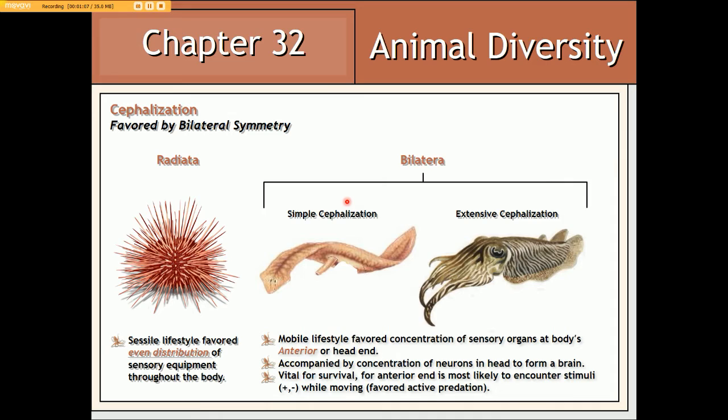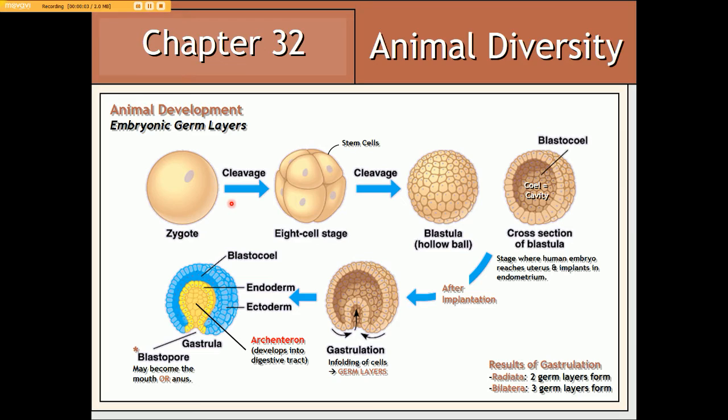With regards to embryonic development across animal groups, after fertilization and the establishment of a zygote, the zygote begins to cleave or split mitotically. With each round of mitotic division, the number of cells associated with the embryo doubles. Eventually, mitotic cleavage will establish an embryo consisting of a central hollow. At this point, we refer to the embryo as a blastula, often known as the hollow ball stage of embryonic development. That hollow within the center of the blastula is known as a blastocoel — the term 'coel' referring to empty space or cavity.